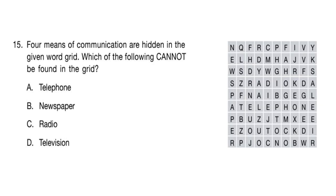Question 15: Four means of communication are hidden in the given word grid. Which of the following cannot be found in the grid? If you look carefully, you can see telephone, newspaper, and radio are present in the grid. Option D — television — is not there. So the correct answer is option D, television.